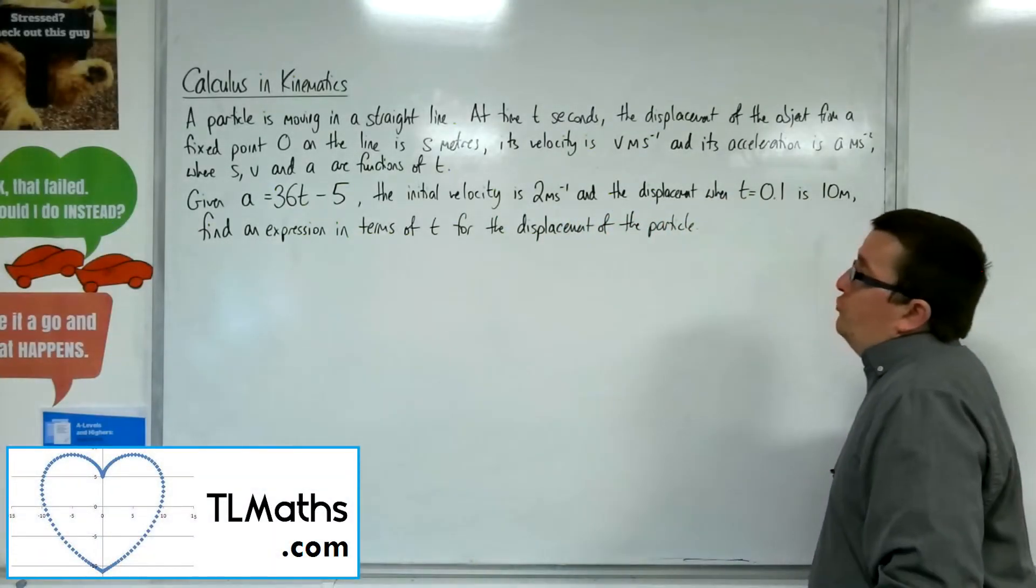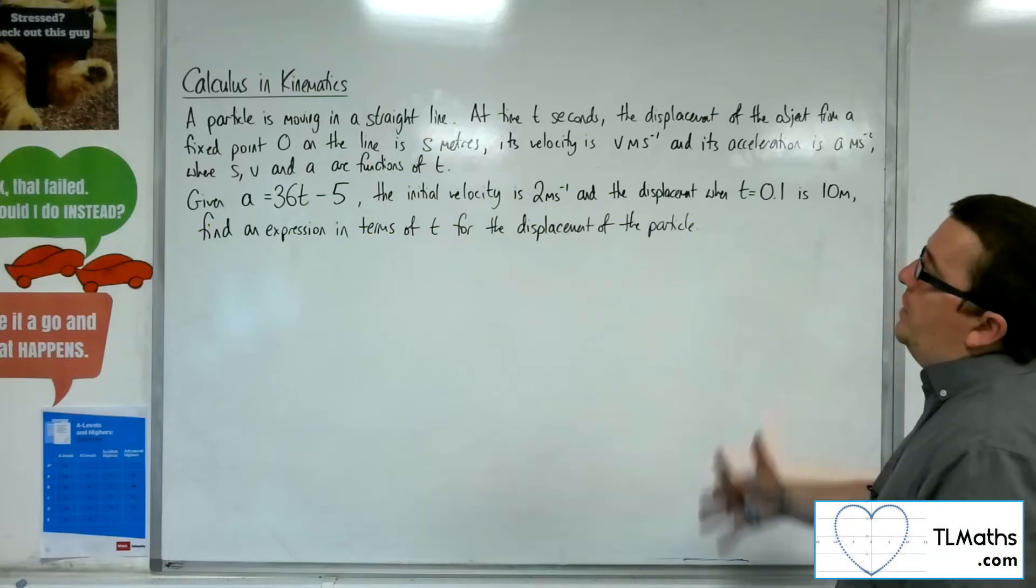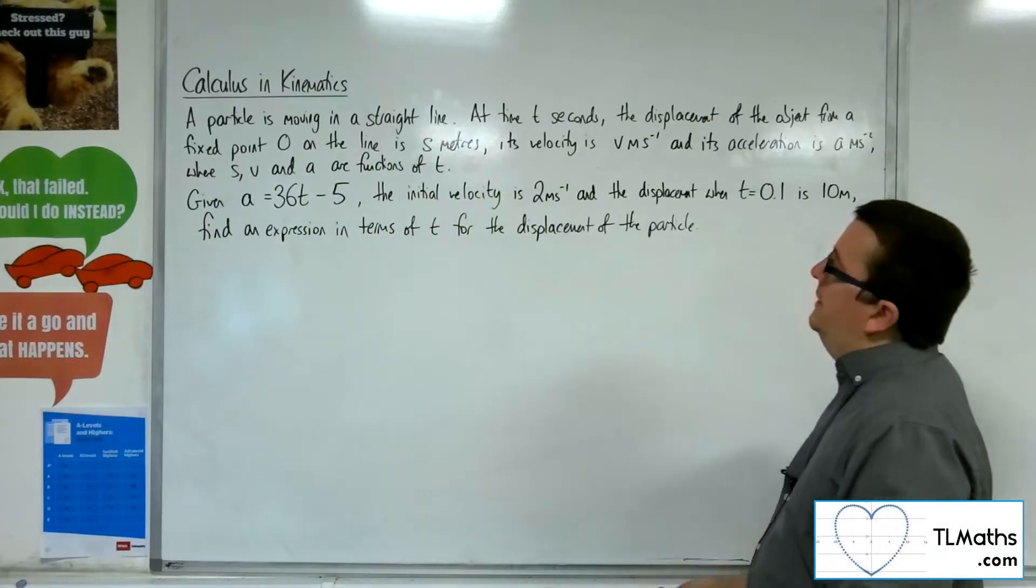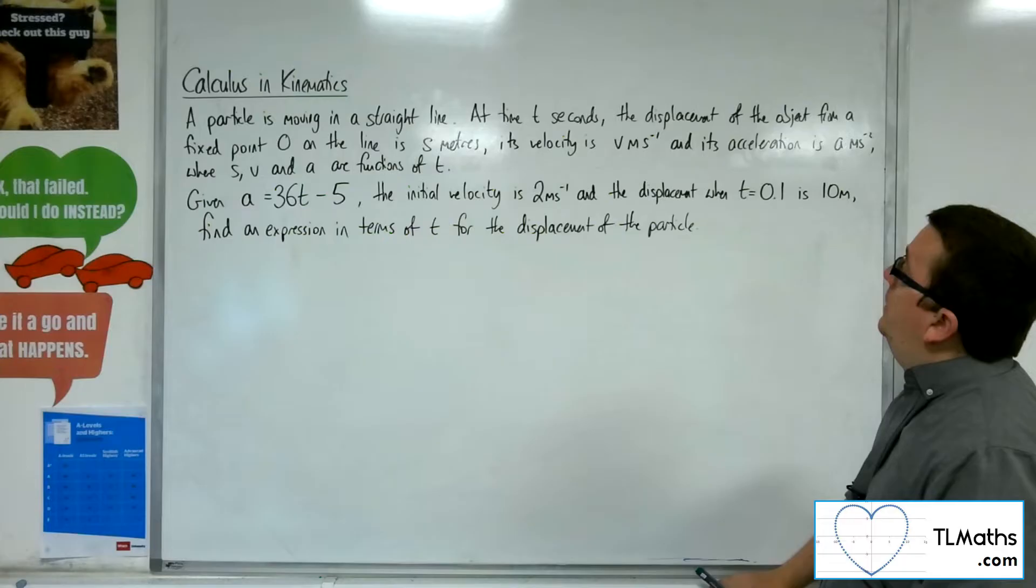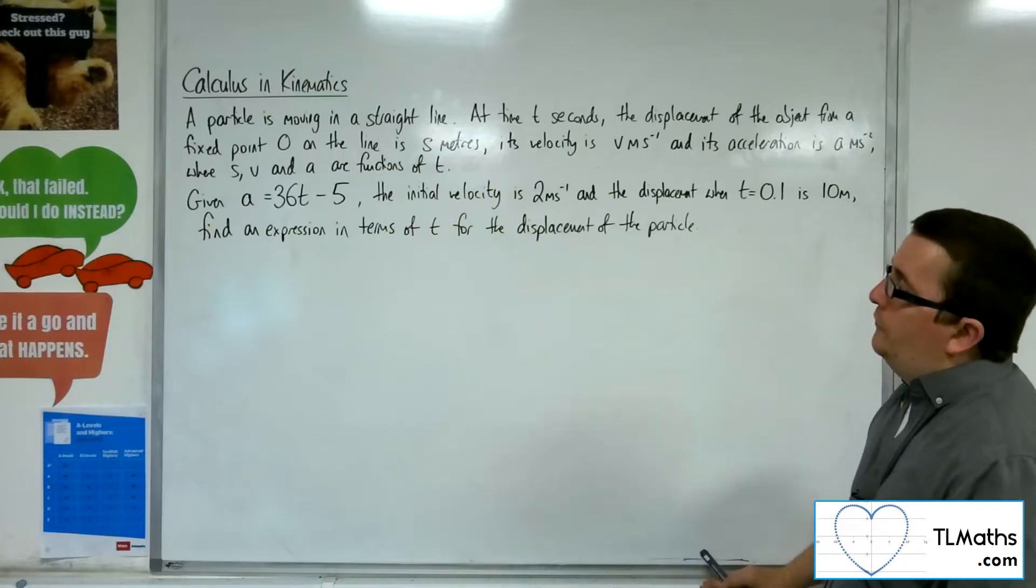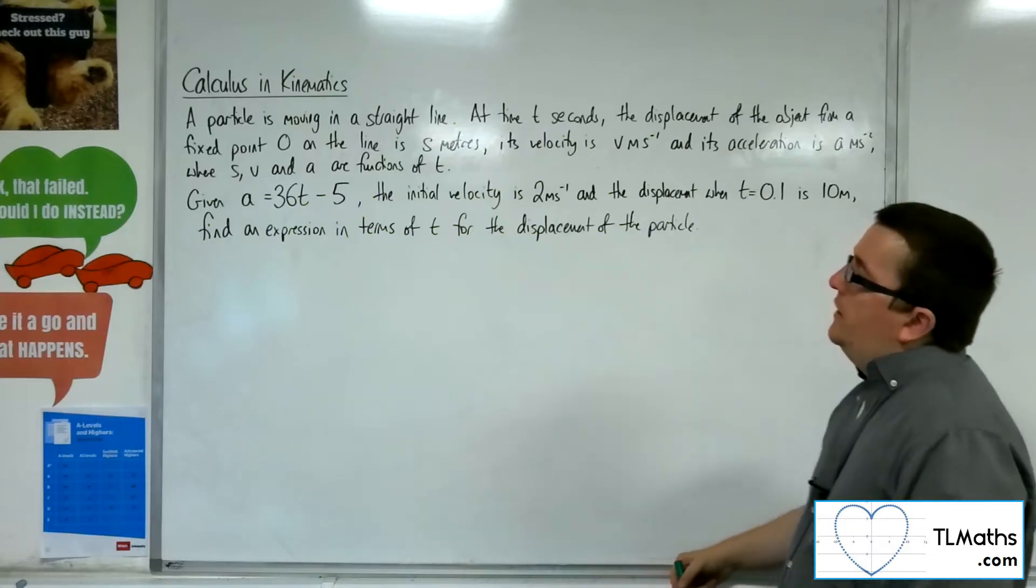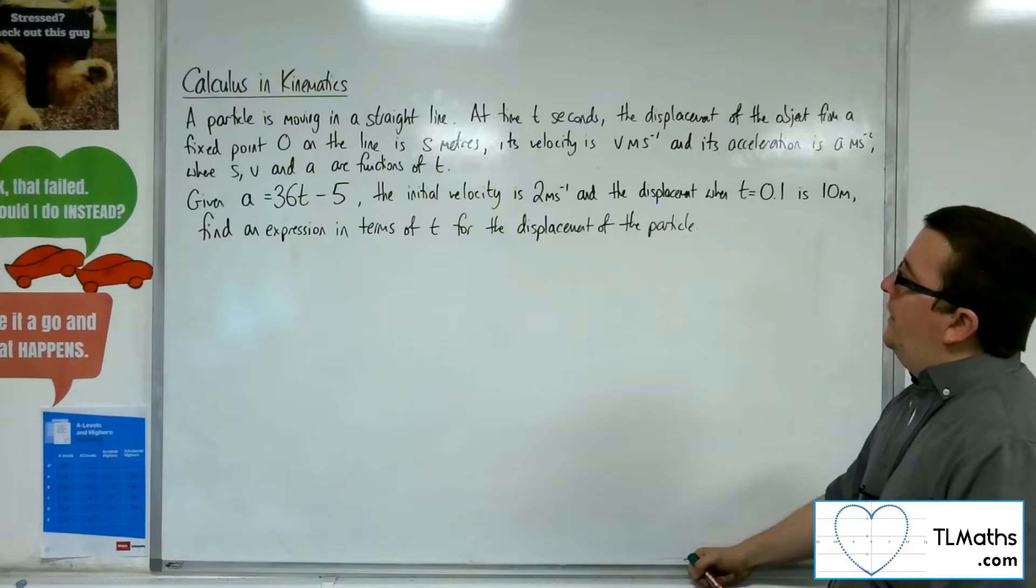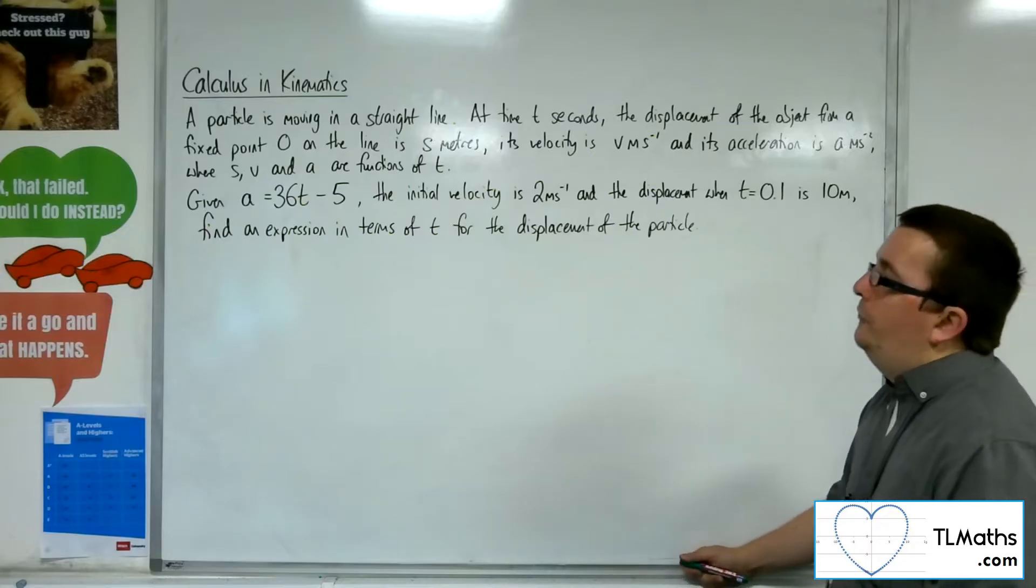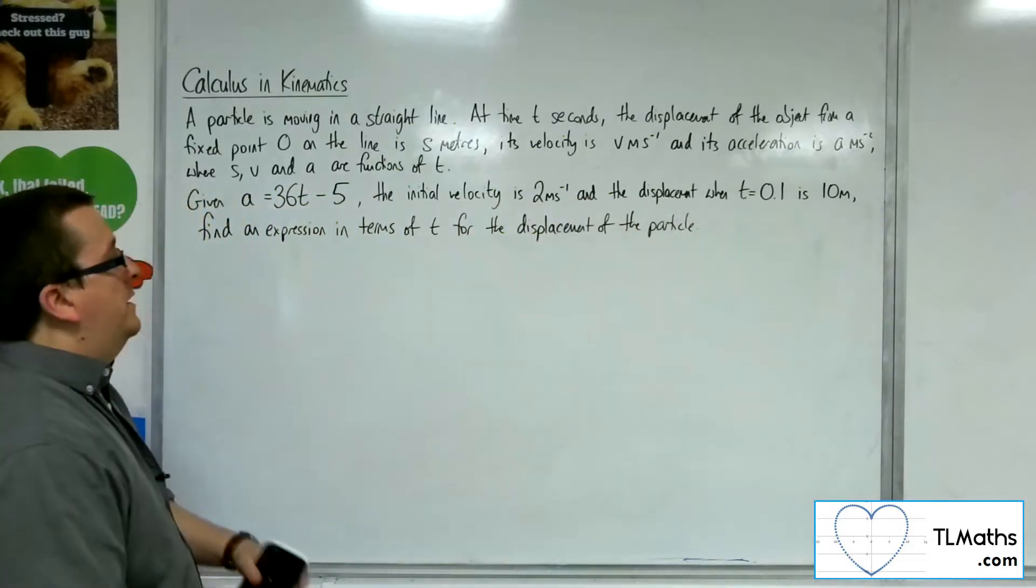In this video, a particle is moving in a straight line. At time t seconds, the displacement of the object from a fixed point O on the line is s metres, its velocity is v metres per second and its acceleration is a metres per second per second, where s, v and a are functions of t. Given that a equals 36t minus 5, the initial velocity is 2 metres per second and the displacement when t is 0.1 is 10 metres, find an expression in terms of t for the displacement of the particle.